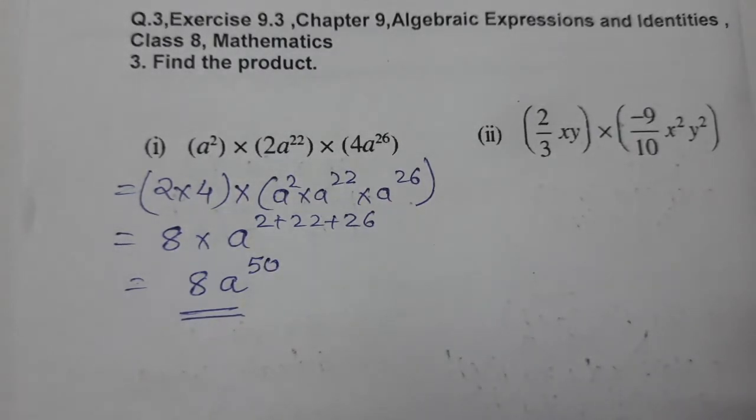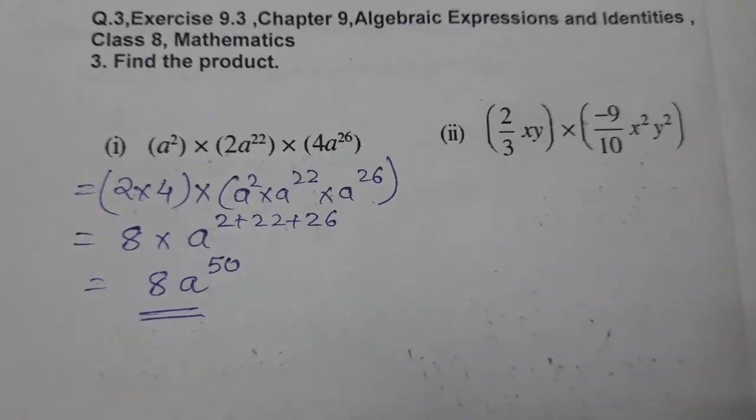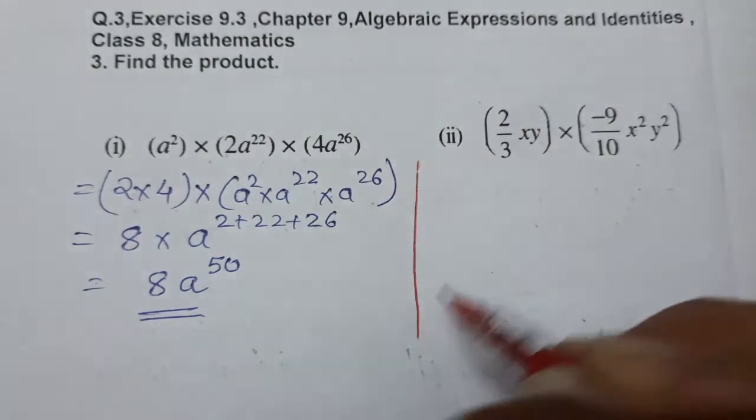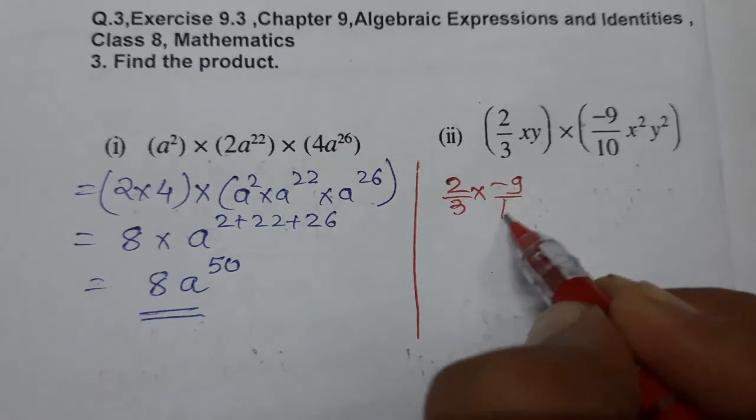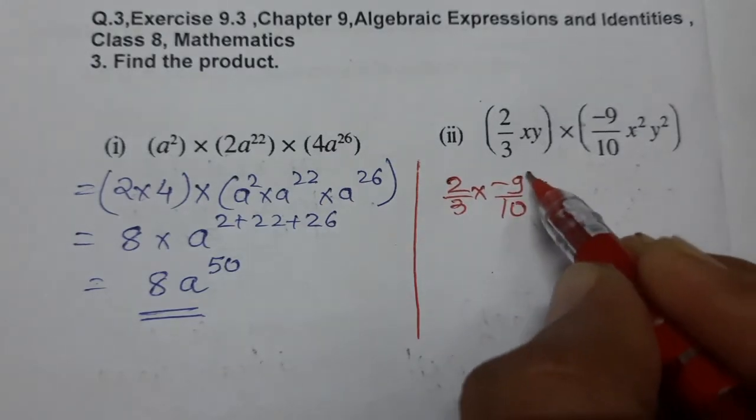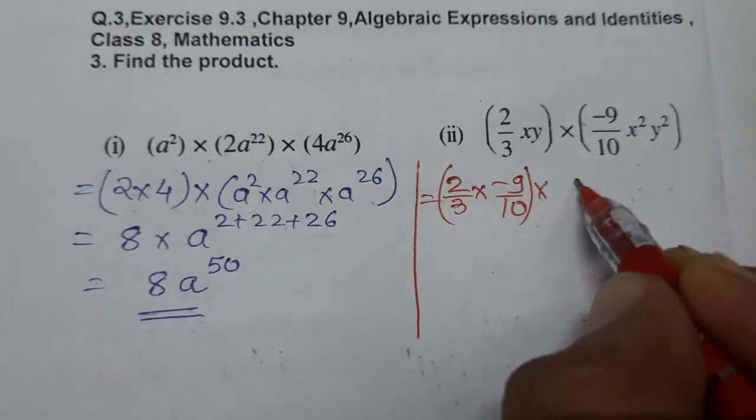Now we'll do another one, the second question. Again, we have to multiply. First of all, fractions with fractions: 2/3 into -9/10. Then x with x, so x and x squared. Then y with y, so y into y squared.